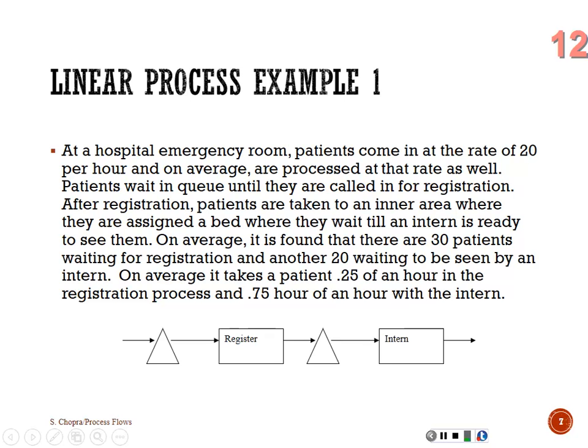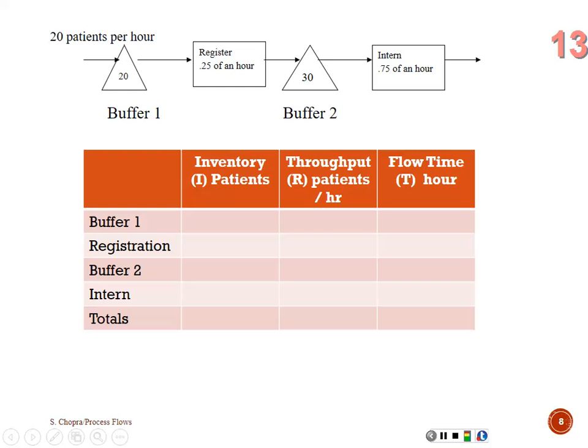Patients wait in queue until called for registration. After registration, patients are taken to an inner area where they wait until an intern is ready to see them. There are 30 patients waiting for registration — that's inventory, because it's a count of our flow unit. Another 20 are waiting to be seen by an intern — also inventory. It takes a patient 0.25 of an hour in registration and 0.75 of an hour with the intern — those are flow time.